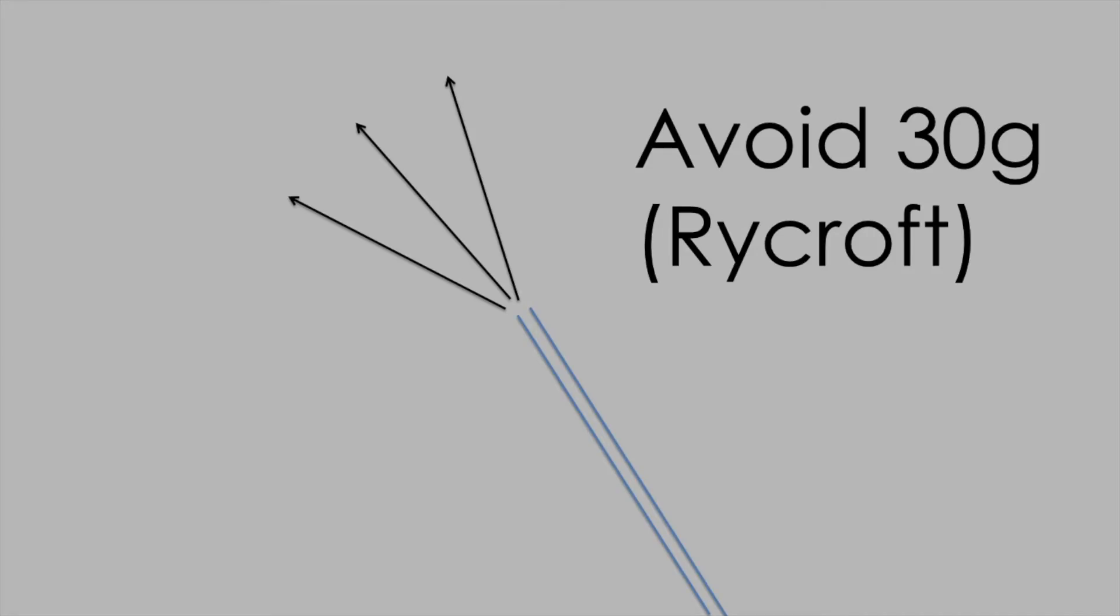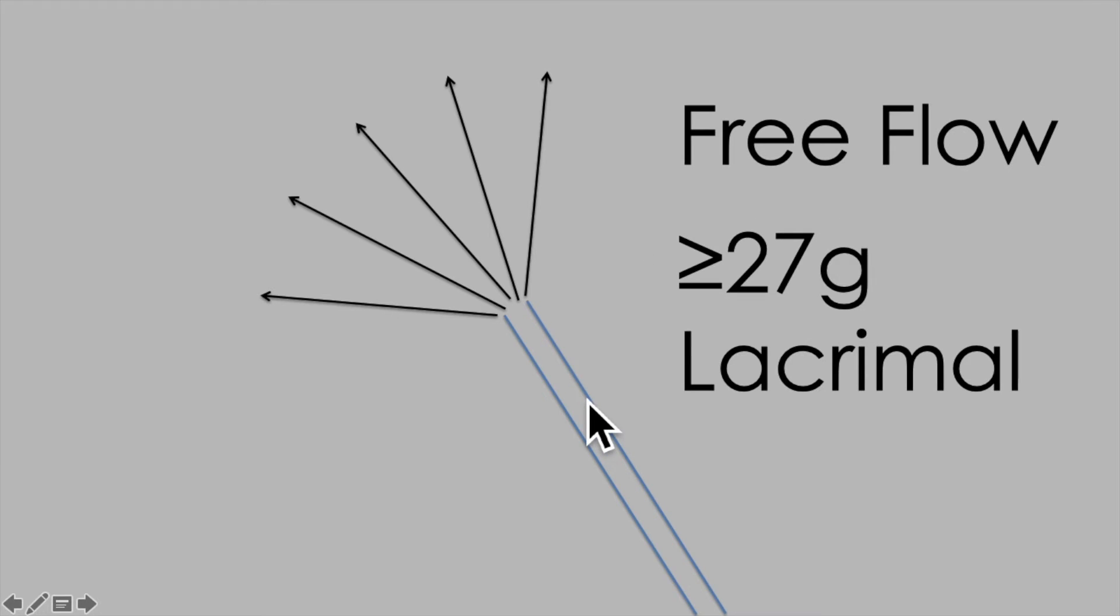On cannula choice, I'd avoid using anything too narrow gauge like a 30 gauge Rycroft, for example. All you really achieve with that is raising the pressure in the barrel of the syringe—there's too much resistance through the cannula to achieve free flow. So something greater than 27 gauge. I find a standard lacrimal cannula is very good. There are also proprietary hydrodissection cannulas you can use.